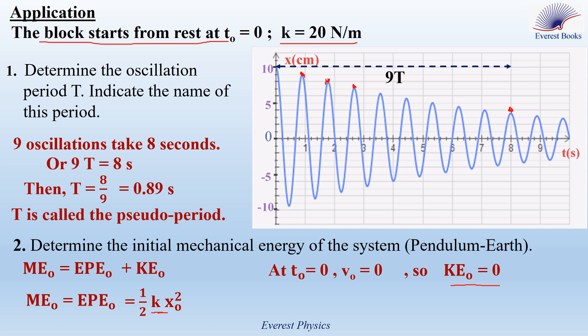We still have EPE₀, which equals ½ k x₀². The force constant k is 20 N/m, and x₀ can be obtained from the graph: it is 10 centimeters, or 0.1 meters. So the mechanical energy at t₀ equals 0 is ½ × 20 × (0.1)², giving an answer of 0.1 joules.